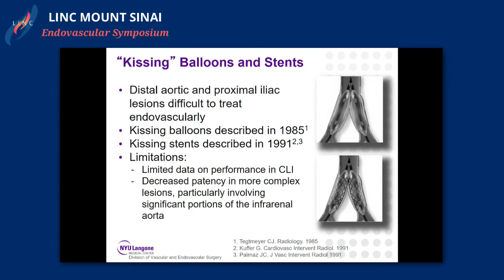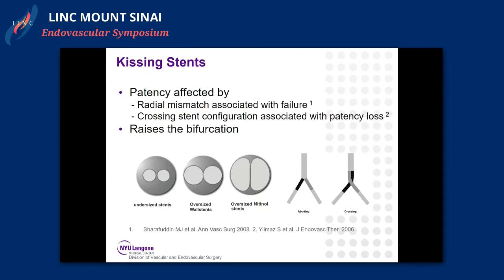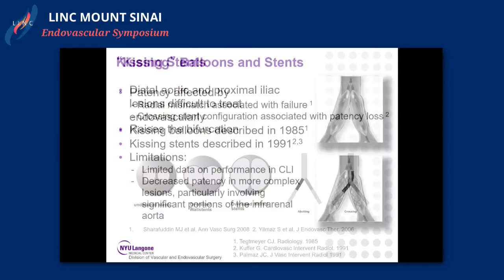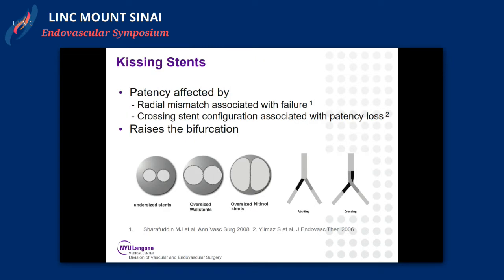The advent of endovascular technologies notwithstanding, this location of occlusive disease remains somewhat challenging, especially when we talk about complete occlusions of the distal aorta. Kissing stents — in particular balloons and stents — have long been used for this location, first described in 1985 and then stents in 1991, but there are limitations with more complex lesions, particularly involving significant portions of the infrarenal aorta. Patency can be affected by radial mismatch associated with failure, and crossing stent configurations can also be associated with patency loss.